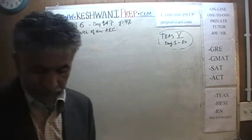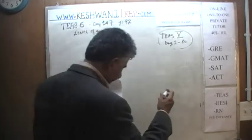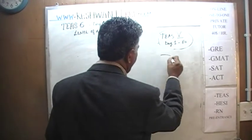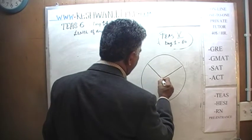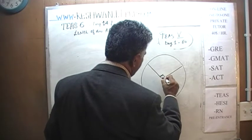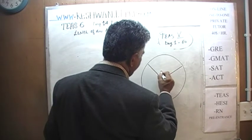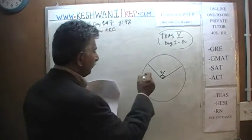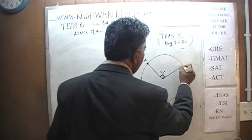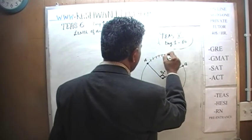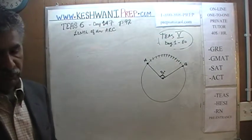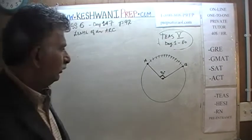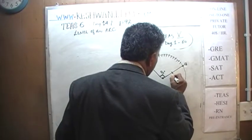Today we are going to talk about the concept of the length of an arc. For example, if we are given a circle with a center and we are told that these two lines make a 90-degree angle, the question is: what is the distance from point A to point B? That's what we are trying to figure out. In order to find that distance, we have to know the radius of the circle — we must know the radius.